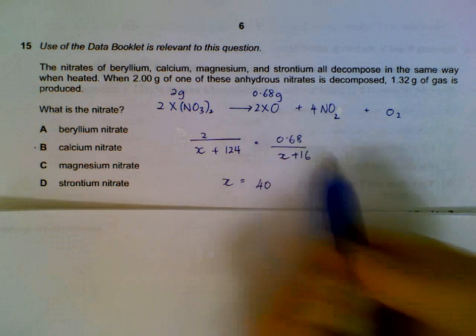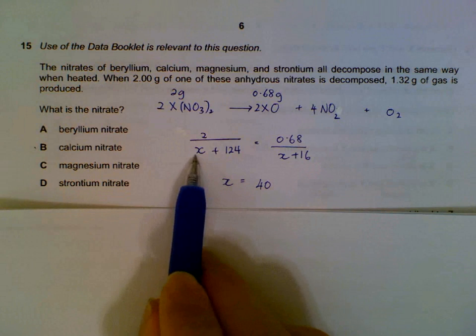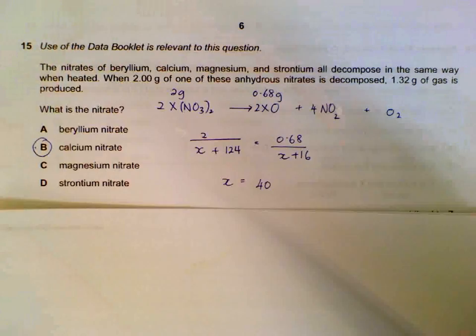Once we have this equation, you can solve for X. That will give us the MR of your unknown metal. In this case it is calcium, because MR calculated is 40.